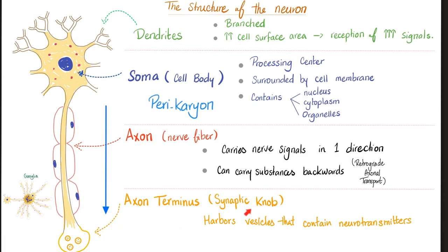The axon terminus, or synaptic knob, is located in the synapse — you have presynaptic and postsynaptic components. It contains vesicles that hold neurotransmitters. Depending on location, the neurotransmitter could be acetylcholine, norepinephrine, dopamine, etc.